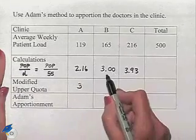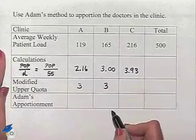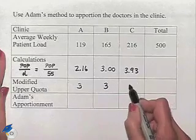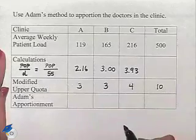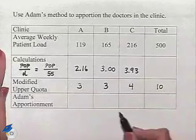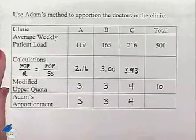In our clinic B, we have an exact value, so we're going to keep that at 3.00. And for clinic C, we round up to 4.00. Notice that we end up with a total of 10, and that's the number of doctors we need to apportion. So Adam's apportionment would be 3, 3, and 4.